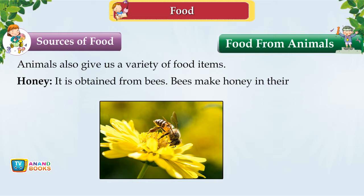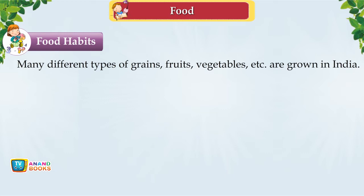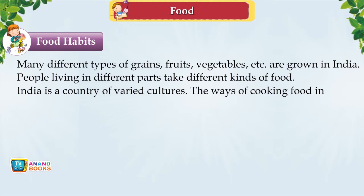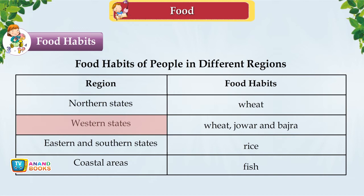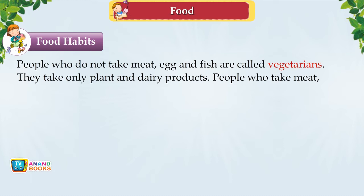Food Habits. Many different types of grains, fruits and vegetables are grown in India. People living in different parts take different kinds of food. India is a country of varied cultures and the ways of cooking food in different cultures also vary. People who take meat, eggs and fish along with plant products are called non-vegetarians.